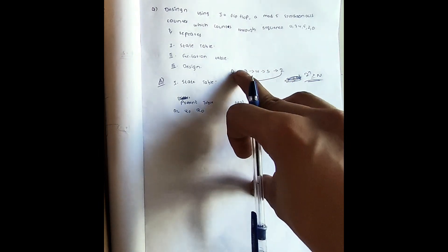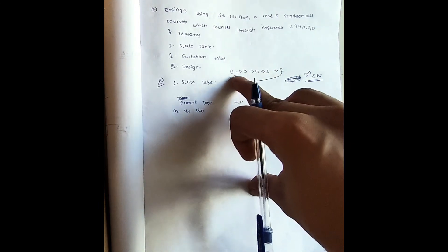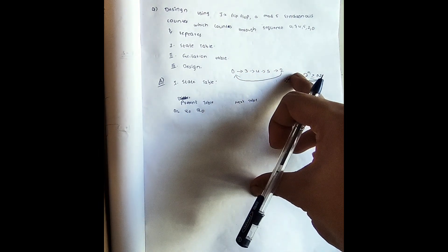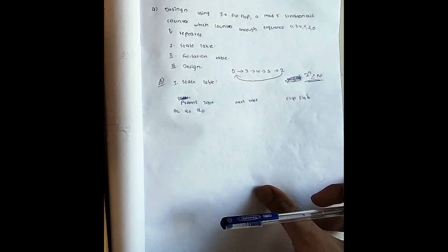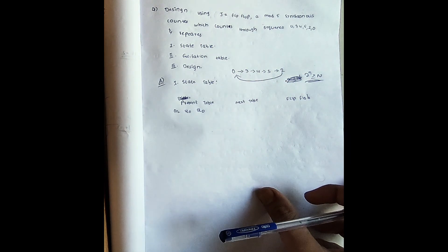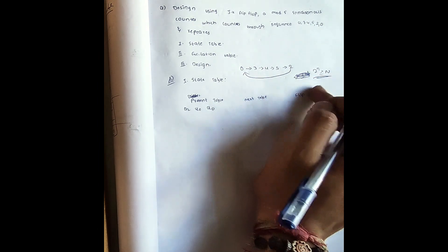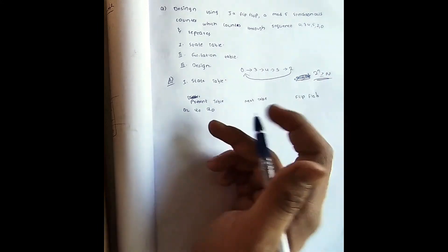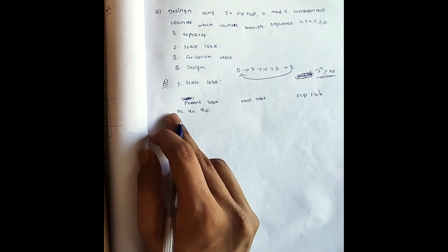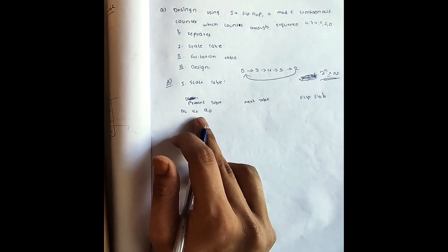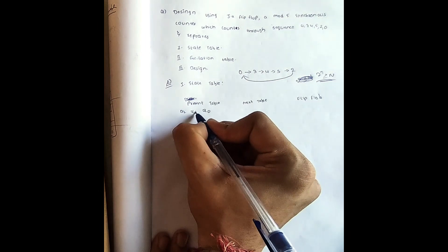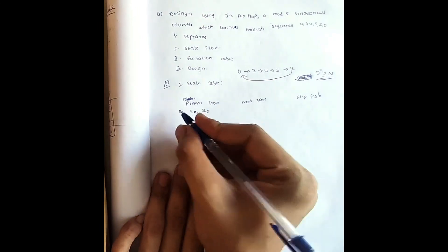There are five states: 0, 1, 2, 3, 4 — that is five states. Small n is the number of flip-flops (binary variables) required. For three variables we will write Q2, Q1, and Q0. With three variables, 2^3 = 8 which is ≥ 5, so three flip-flops are sufficient.